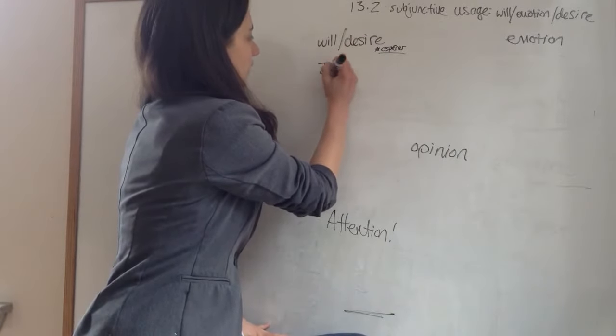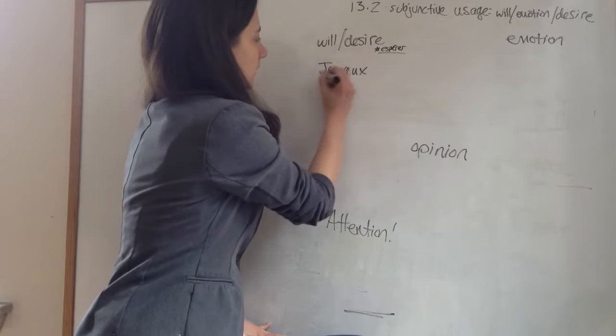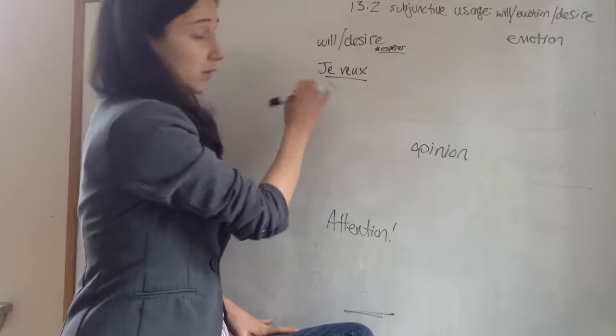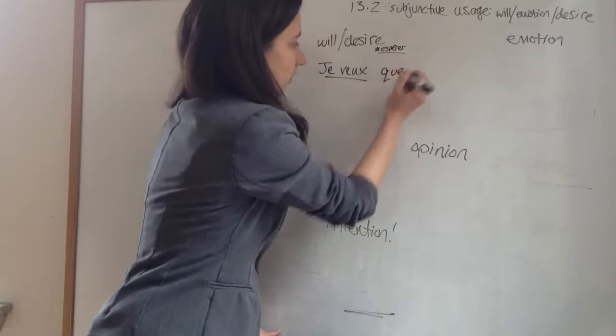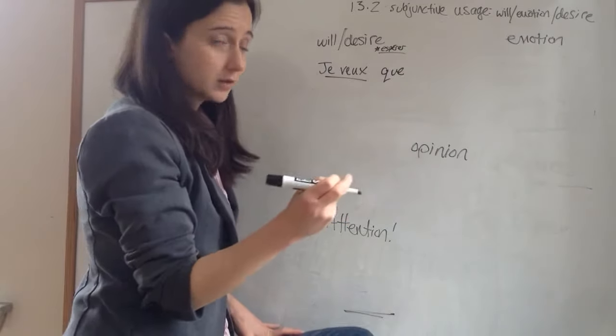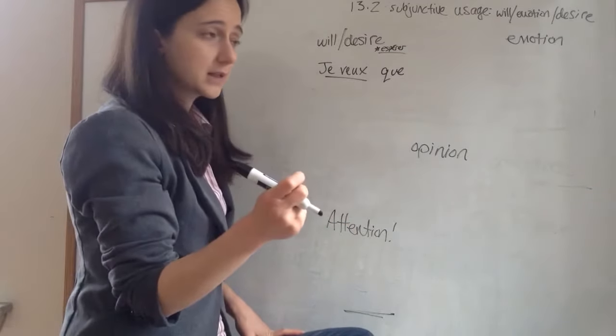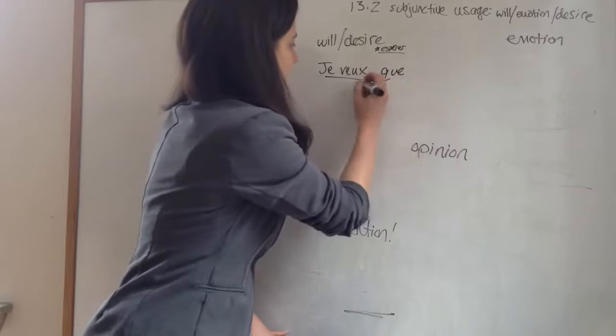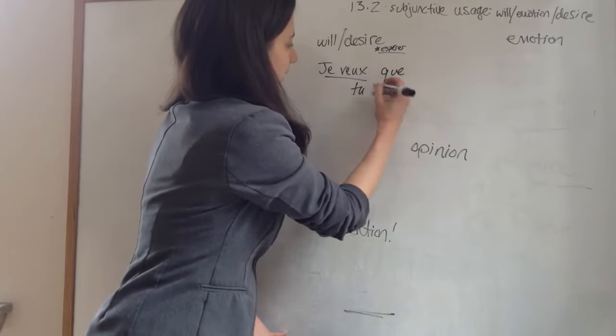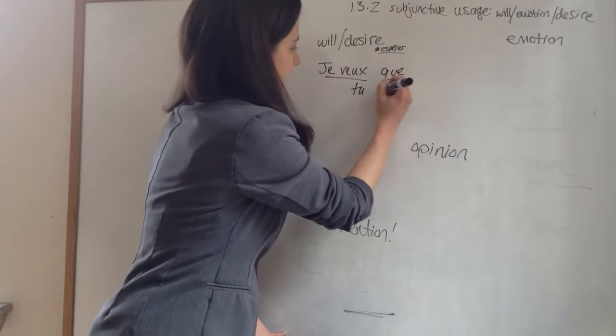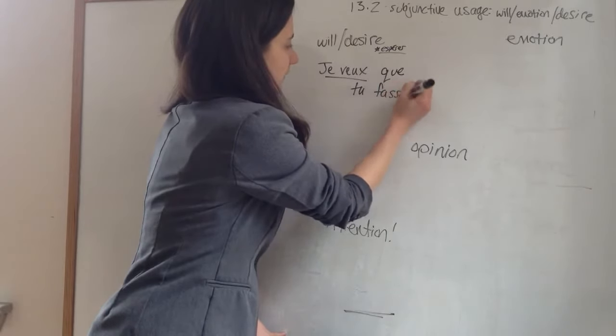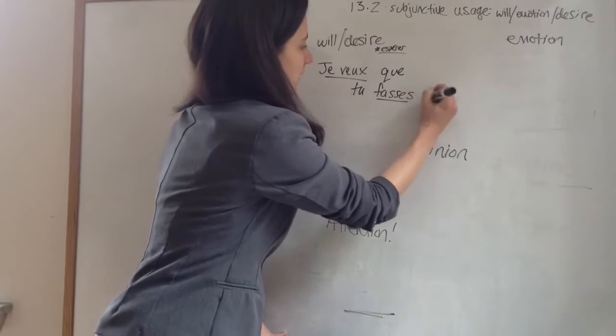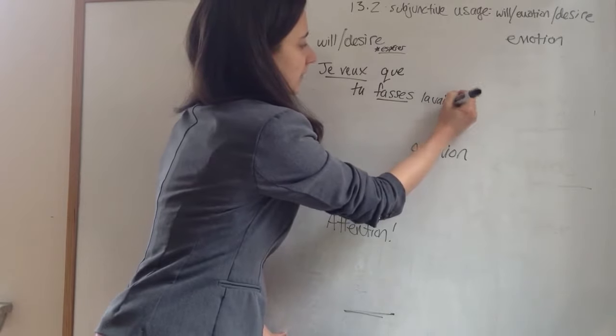So we'll say, je veux. So we have one subject, je. Que, remember, we have our que, which is often with our subjunctive. Que tu fasses la vaisselle.